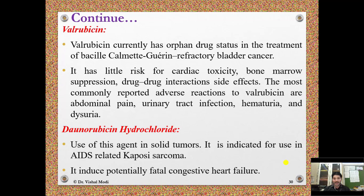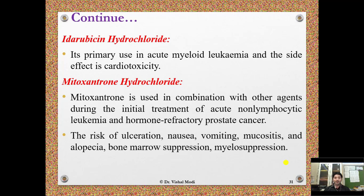Daunorubicin hydrochloride is used in solid tumors and AIDS-related Kaposi's sarcoma and can induce potentially fatal congestive heart failure. Idarubicin hydrochloride is primarily used in acute myeloid leukemia with cardiotoxicity as a side effect. Mitoxantrone hydrochloride is used in combination with other agents for initial treatment of acute non-lymphocytic leukemia and hormone-refractory prostate cancer; risks include ulceration, nausea, vomiting, mucositis, alopecia, bone marrow suppression, myelosuppression, and risk of infection.